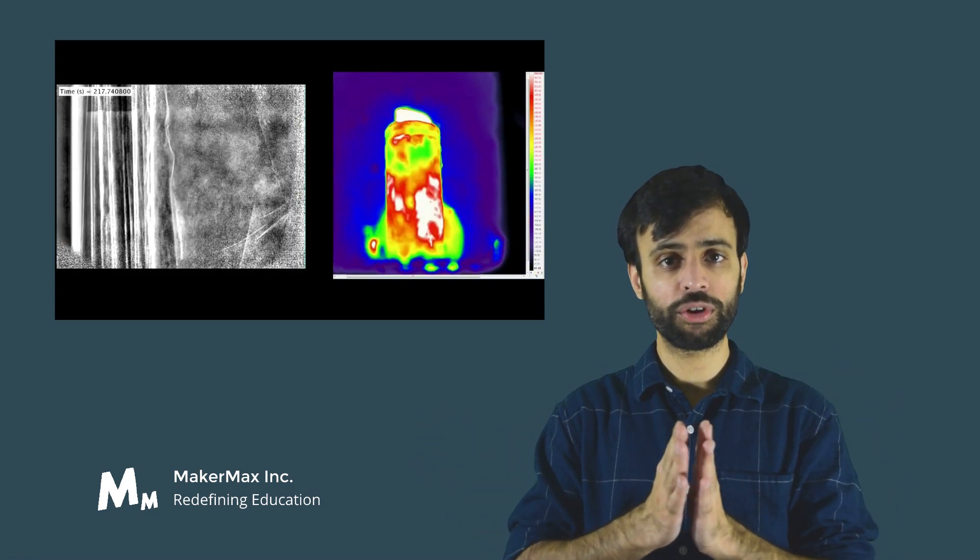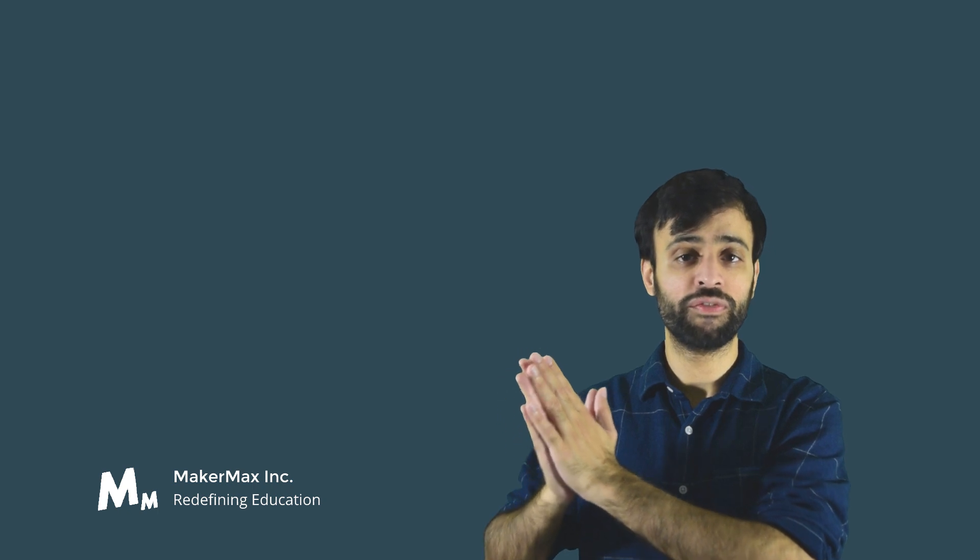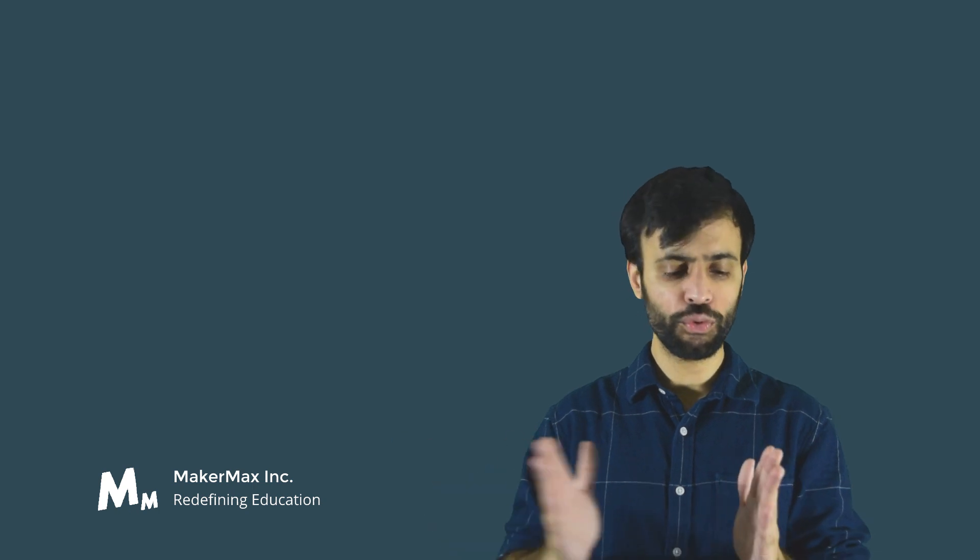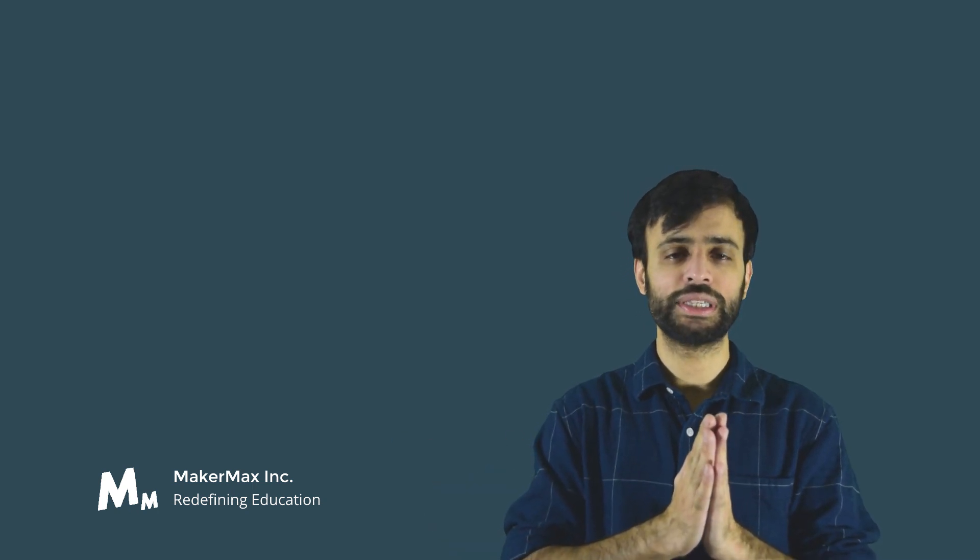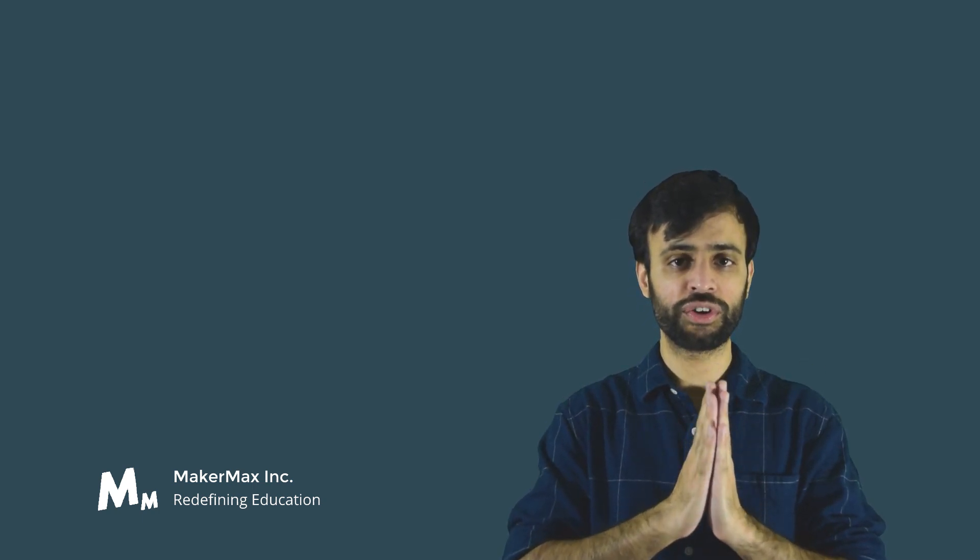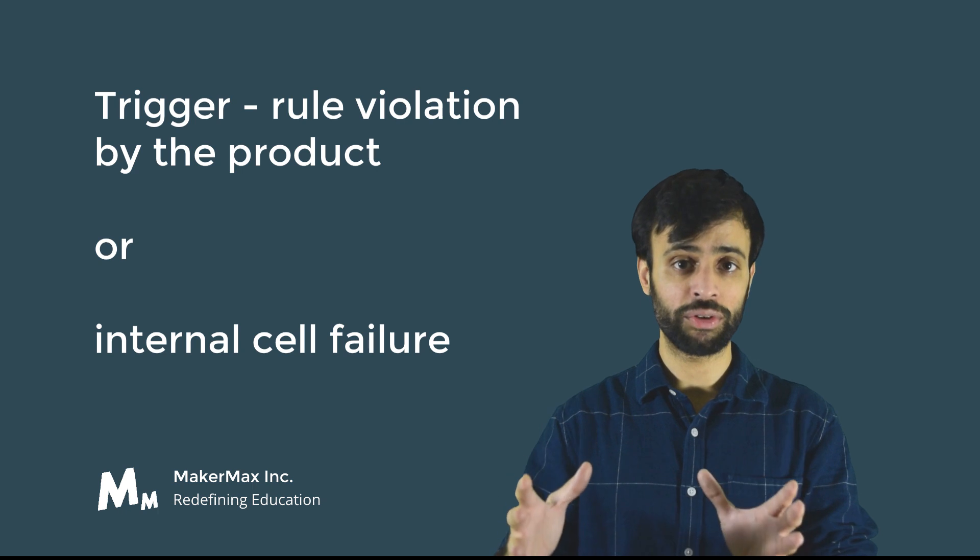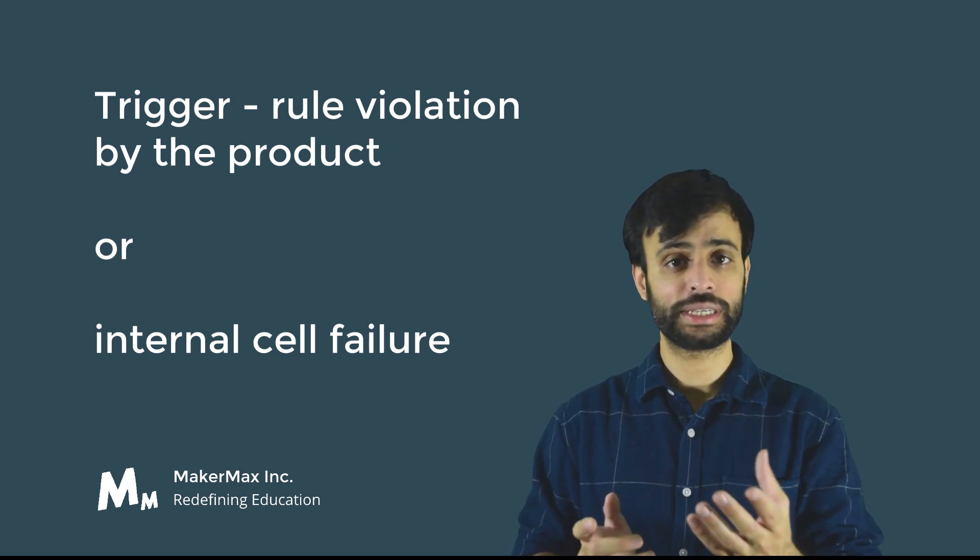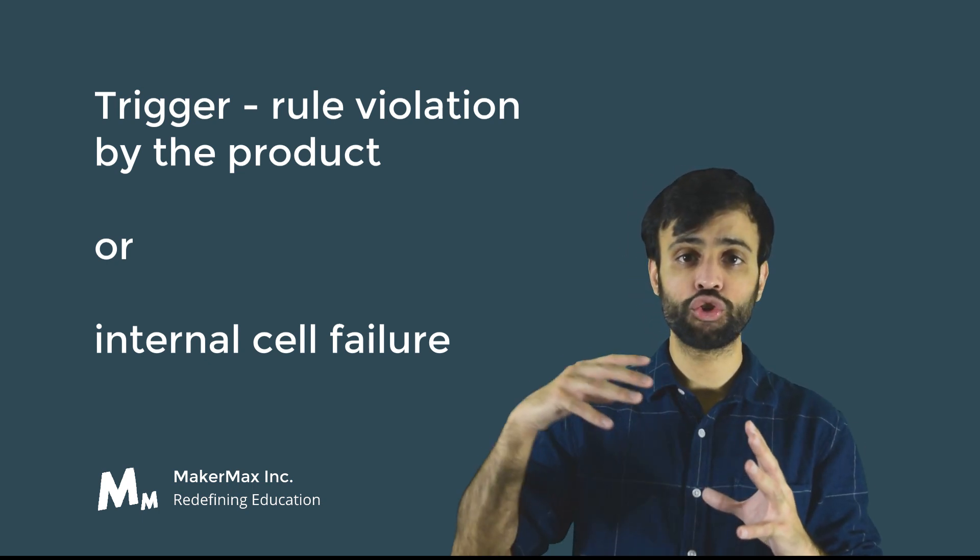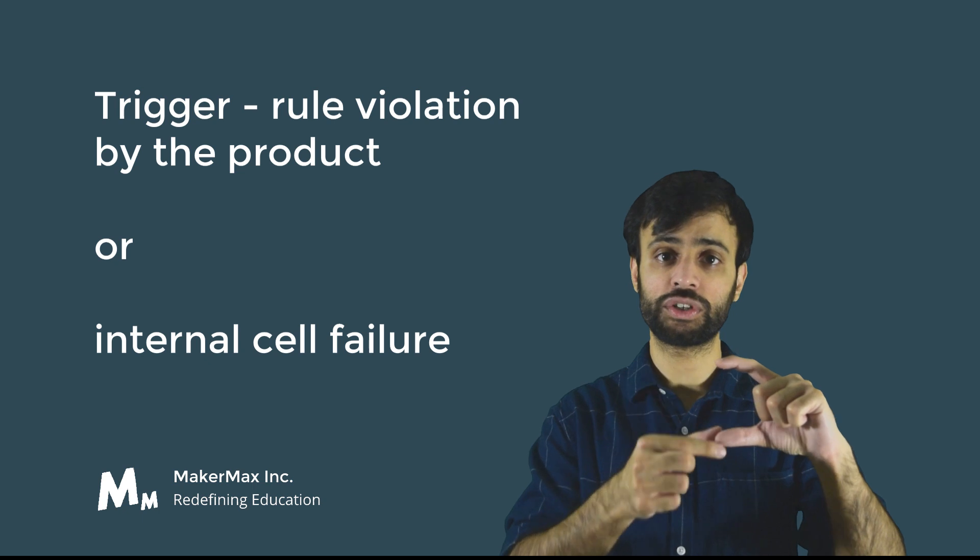Before thermal runaway reaches that final stage where there could be a fire or explosion of that cell, the first thing that happens is that one or many of the rules governing a single lithium-ion cell or group of cells is violated. For example, an 18650 lithium-ion cell has a rule of overcurrent. If you demand too much current from that cell, it will heat up because of internal resistance.